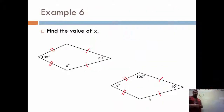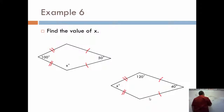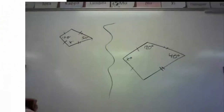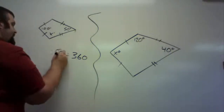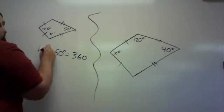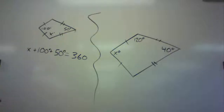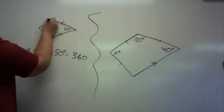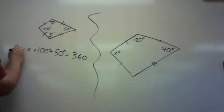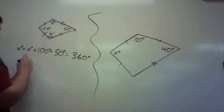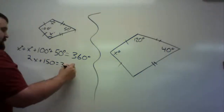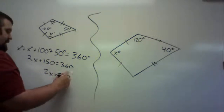Let's apply this. Find the value of x in the left kite. All angles of a quadrilateral add up to 360. I have 50 degrees, 100 degrees, and x — but that's only three angles. Since one pair of opposite angles in a kite is congruent, this angle is also x degrees. So: 2x + 50 + 100 = 360, giving 2x + 150 = 360, then 2x = 210, so x = 105.